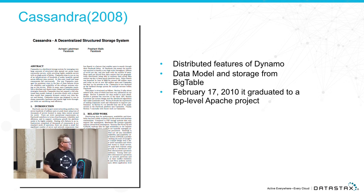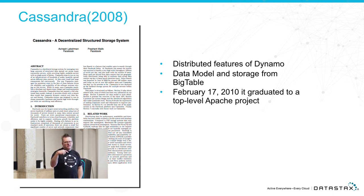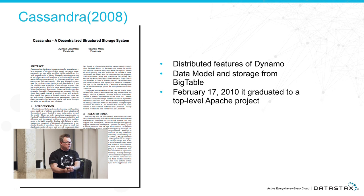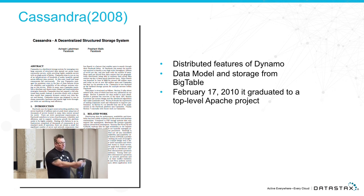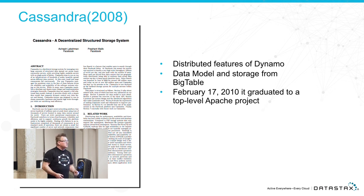Cassandra featured all these things about Dynamo — uptime — but it took the Bigtable data model and said, we're gonna glue these things together and build this really robust database with a cool data model. Because Dynamo is key-value, and if you've ever worked with a key-value database, it's good for some things but really bad for most things. Cassandra is a richer data model.